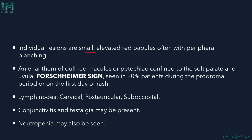Individual lesions are very small — elevated red papules, often with peripheral blanching. There is also an enanthem: red dull macules or petechiae confined to the soft palate or uvula, called Forchheimer's sign. This sign is seen in about 20% of patients during the prodromal period or first day of the rash.